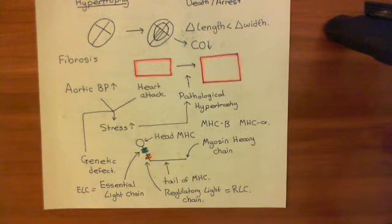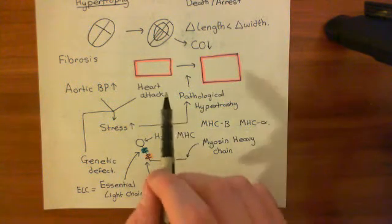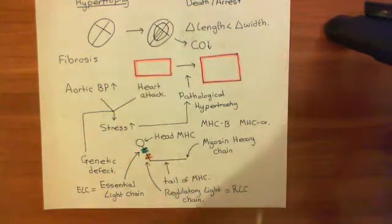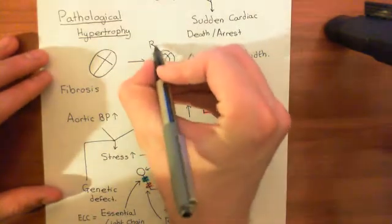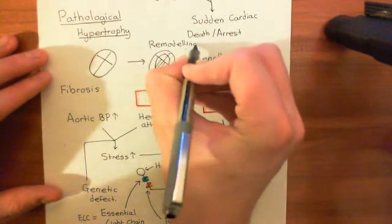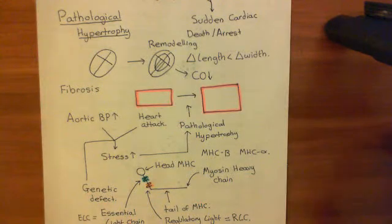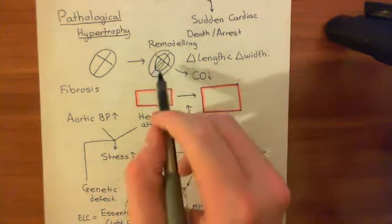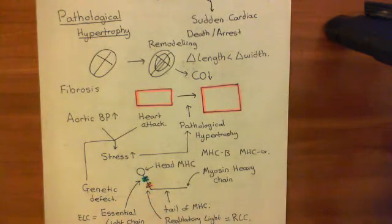Overall, the heart undergoes pathological remodeling — often just called remodeling — in order to try to strengthen itself so it can deal with pumping blood into the aorta. It is basically a response to the heart struggling to pump blood. But the reality is it doesn't help; it actually reduces cardiac function further.